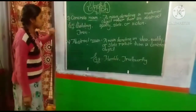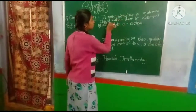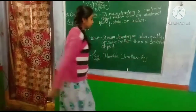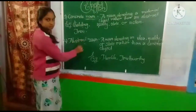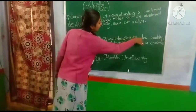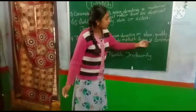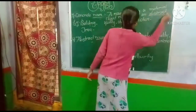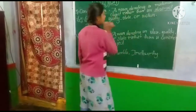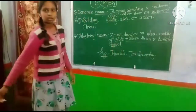What is the difference between concrete noun and abstract noun? In concrete noun, there is a material object rather than an abstract quality, state, or action. But in abstract noun, we can see a noun denoting an idea, quality, or state rather than a concrete object.